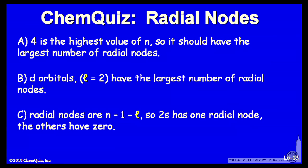Let's look at some possible arguments. A, 4 is the highest value of n that we have, so it should have the largest number of radial nodes.